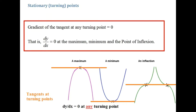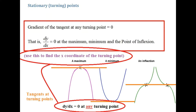So dy/dx equals zero at any turning point, and we use dy/dx equals zero to find the x-coordinate of the turning point. Remember: use dy/dx equals zero to calculate the x-coordinate of the turning point.